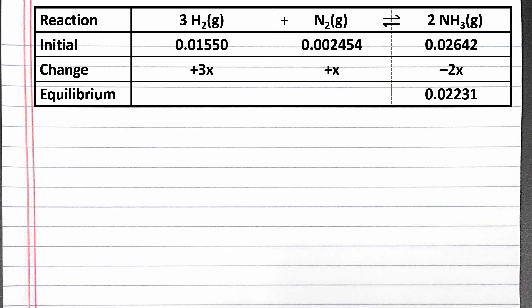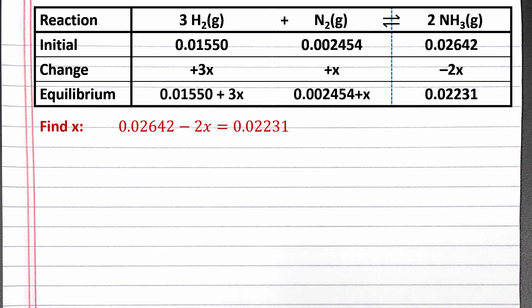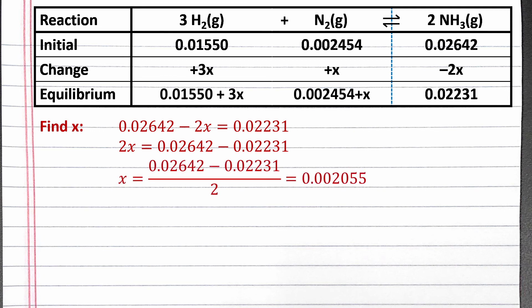The equilibrium row is the initial row plus the change row. Now we can calculate x based on the column for ammonia. We know 0.02642 minus 2x needs to equal 0.02231. We can bring 2x to one side and the numbers to the other side by adding 2x to both sides and subtracting 0.02231 from both sides. Solving for x, we get 0.002055.